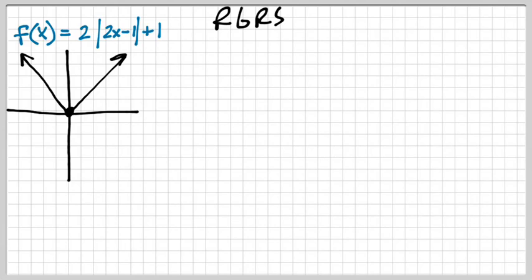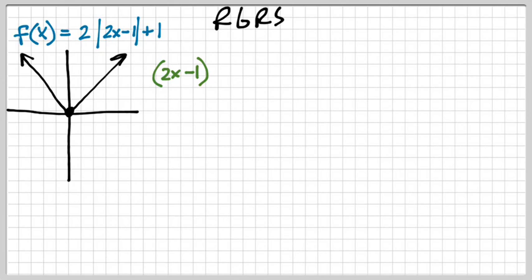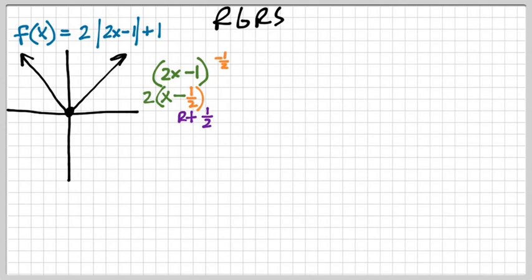Now let's worry about the shifts. I have something in front of x, so I write the parenthesis: 2x minus 1. I have to factor out what's in front. In my first example I factored out a 3 and it worked out nicely because 3 goes into 9 three times. However, it doesn't always work out that nice. If I factor out a 2 from this, I have x by itself — but when factoring out a 2 from a 1, it's like dividing: 1 divided by 2 is just one half. So it's going to be a horizontal shift to the right one half.